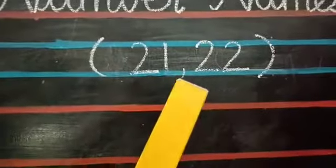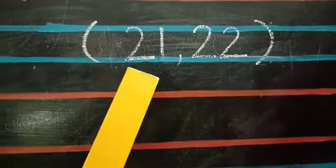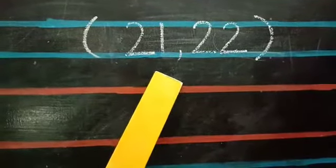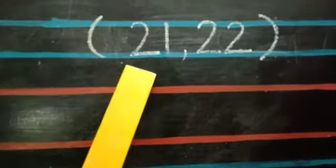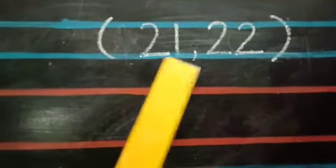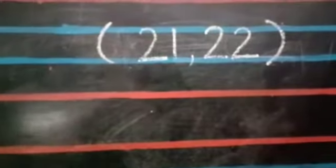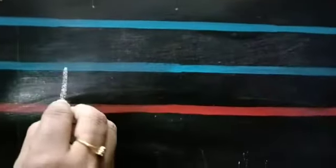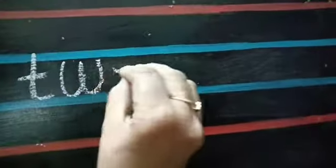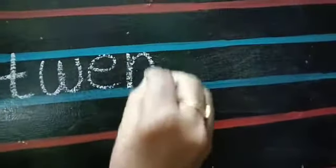You already know the number names from 1 to 20, isn't it? Today I am going to proceed with 21 and 22. All of you look at the other side of the board. You all know the spelling for 20. What is 20's spelling? T-W-E-N-T-Y. Twenty.